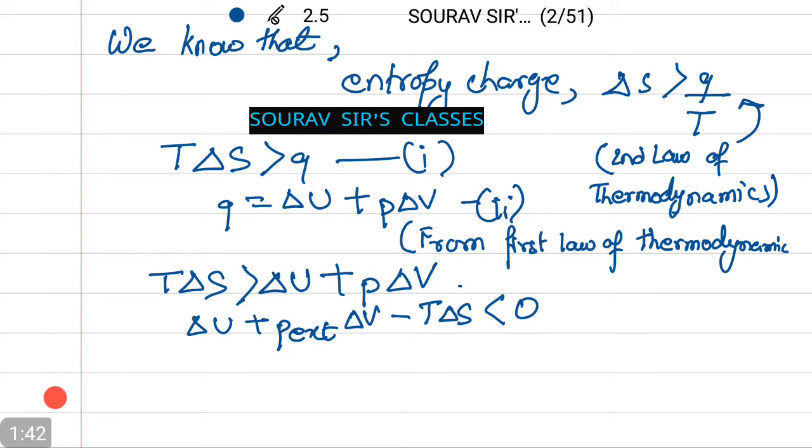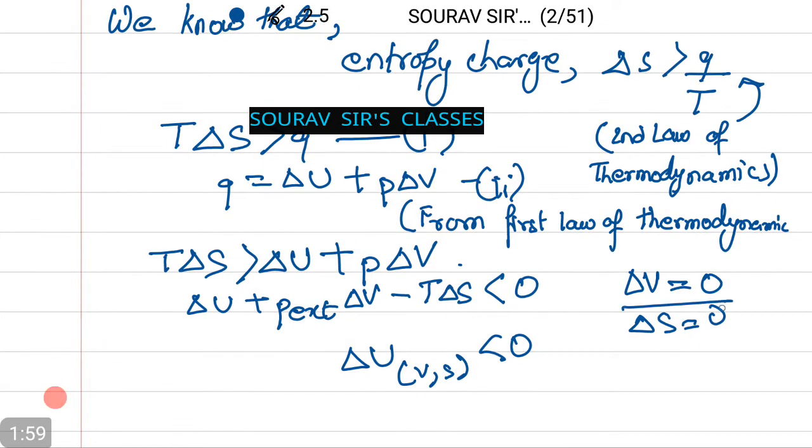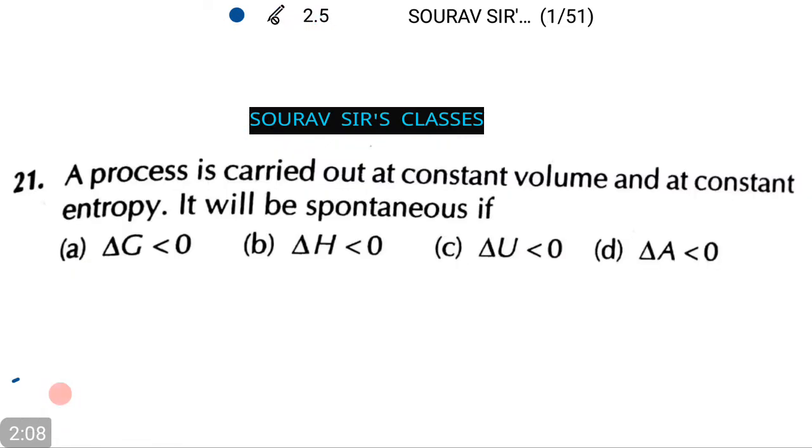When volume and entropy are constant, that is ΔV equals to 0 and ΔS equals to 0, then ΔU at V and S is less than 0. Thus, at constant volume and entropy equilibrium is achieved when energy is minimized. Let us see which of our options was correct. From the question, option number C is the correct answer. Let us see another very different question.